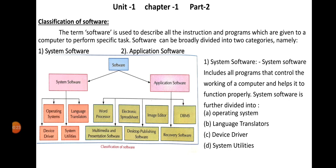The first point is classification of software. Software is used to describe all the instructions and programs which are given to a computer to perform a specific task. Software can be broadly divided into two categories: system software and application software.